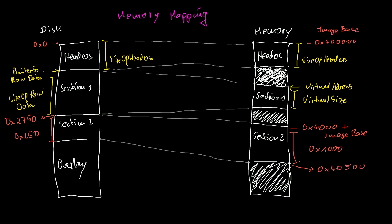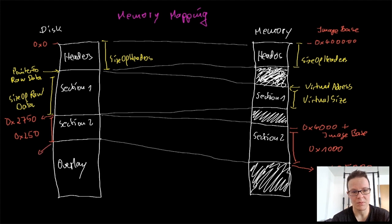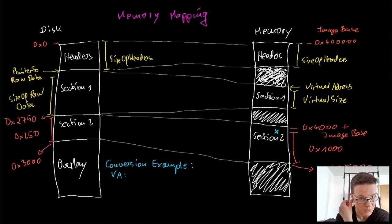And knowing this, we can now calculate or translate addresses, convert them from virtual addresses to physical addresses, or the other way around. Let's do this by example. Let's say we have a virtual address. First you have to determine where it's located. In our case, it's in section 2. If it was in section 1, you would have to use the values for section 1, but now it's in section 2.